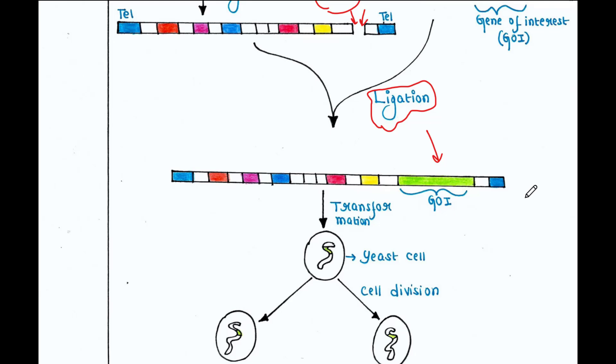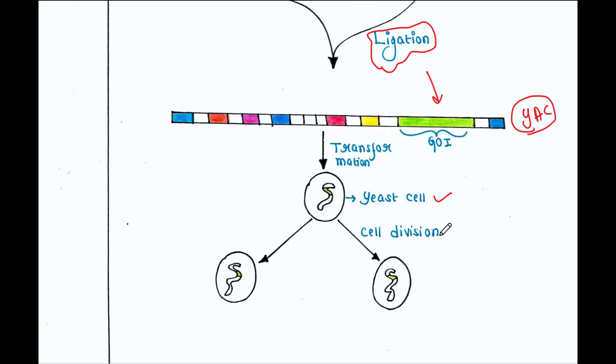This is the YAC vector now containing the GOI. We then transform yeast cells using this recombinant YAC. The YAC is now inside the yeast cell, and as the yeast cell undergoes cell division, the YAC vector also replicates, so both daughter cells receive the YAC vector along with the gene of interest. This is how we replicate YAC in yeast cells.